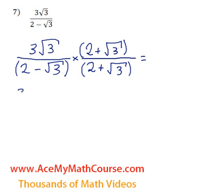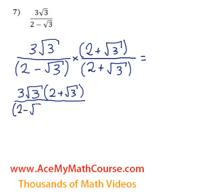So up top, we have 3 root 3 times 2 plus the root of 3. All over. That wasn't quite straight, was it? But that's okay. Hopefully nobody's going to get upset about it.